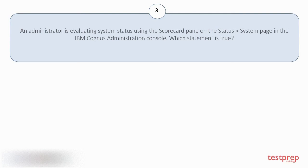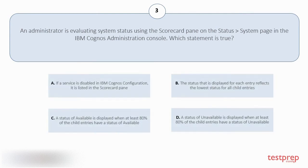Your options are: A. If a service is disabled in IBM Cognos configuration, it is listed in the Scorecard pane. B. The status that is displayed for each entry reflects the lowest status for all child entries. C. A status of Available is displayed when at least 80% of the child entries have a status of Unavailable.